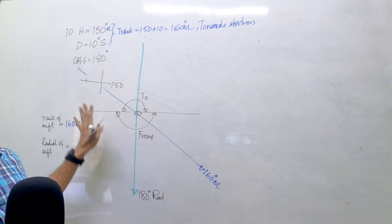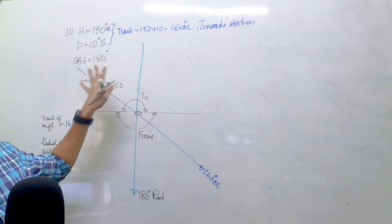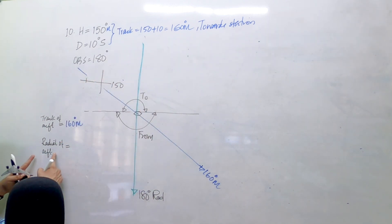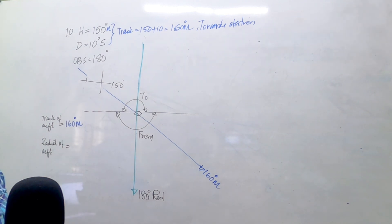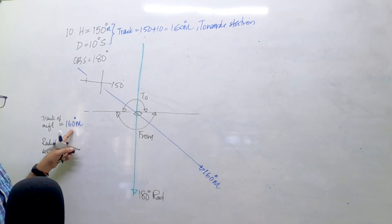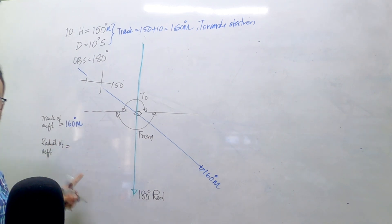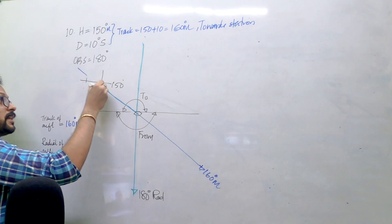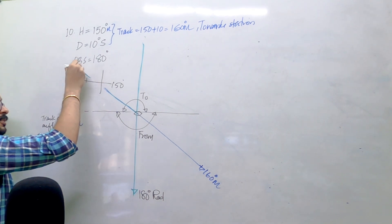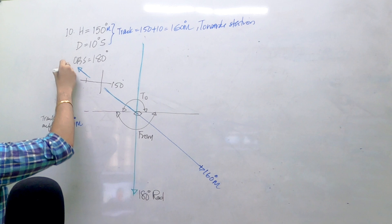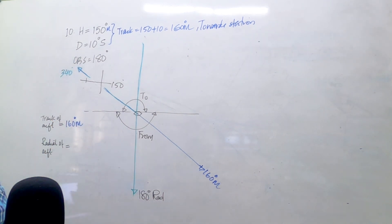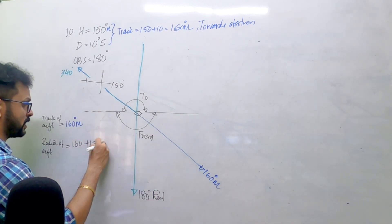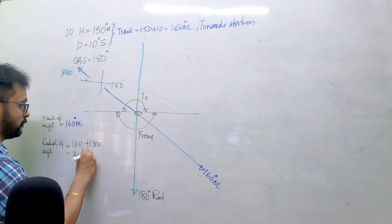Once this is done, the major part of the question is over. So what radial is the aircraft on? The track of the aircraft is 160 to the station, so the radial is exactly opposite - that is 160 plus 180, which is 340 degrees magnetic.